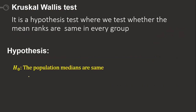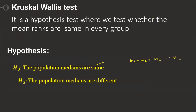What is the hypothesis? The null hypothesis is that the population medians are the same: median one equals median two equals median three, up to median k. The alternative hypothesis is that the population medians are different. This is a general hypothesis; according to the specific problem, we define the hypothesis accordingly.